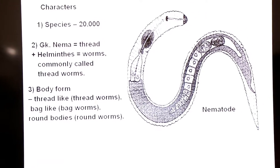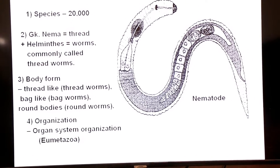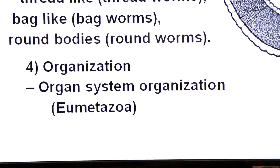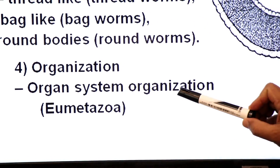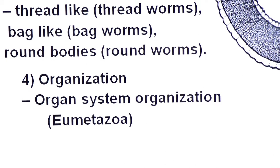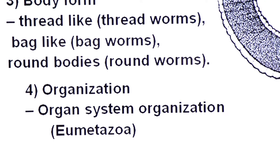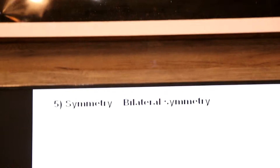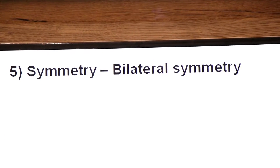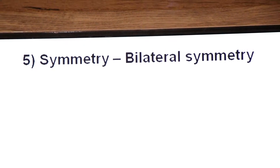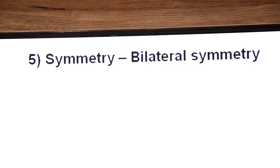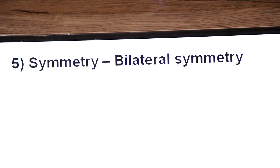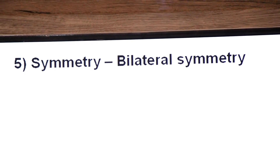Toh yeh saare naam inko body shape ki bunyad pe diye gaye hain. Organization: they have organ system organization and they belong to group Eumetazoa. Their symmetry is bilateral symmetry — two-sided symmetry having one right side and one left side.